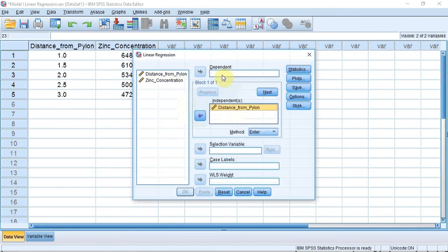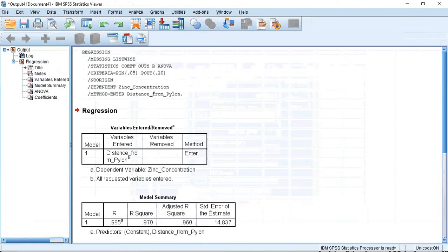The next variable is the dependent variable. This is the concentration of zinc that we measured. I'm going to select this and place it in the dependent box. I'm now going to press OK to run the test.